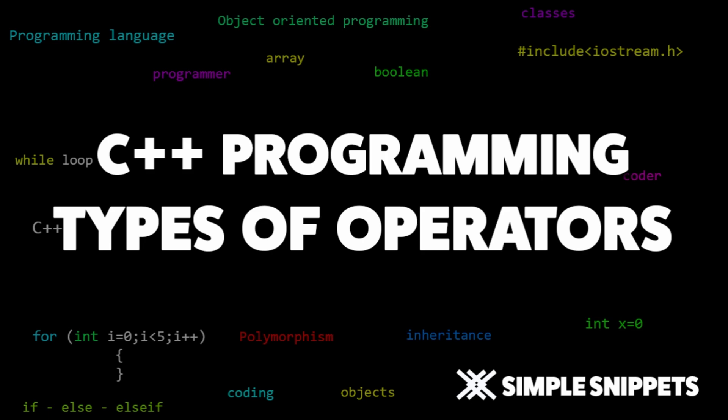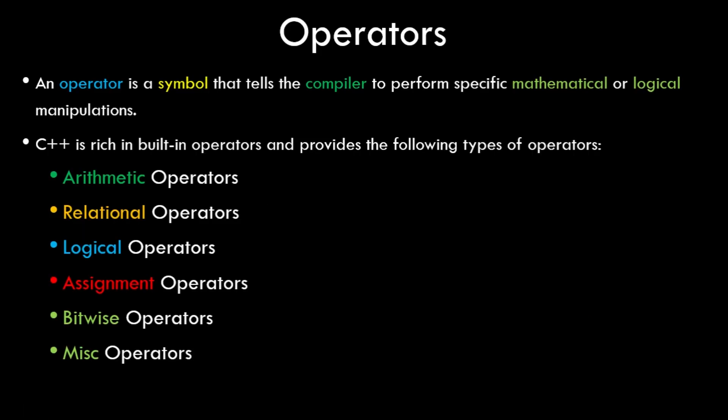In the previous video tutorial we saw what variables and data types are and why we use variables. If you missed that video you can check it out. We saw that variables can help us perform certain operations and calculations to get results according to our necessity. In C++, an operator is a symbol that tells the compiler to perform specific mathematical, logical, or any sort of manipulations or operations on operands.